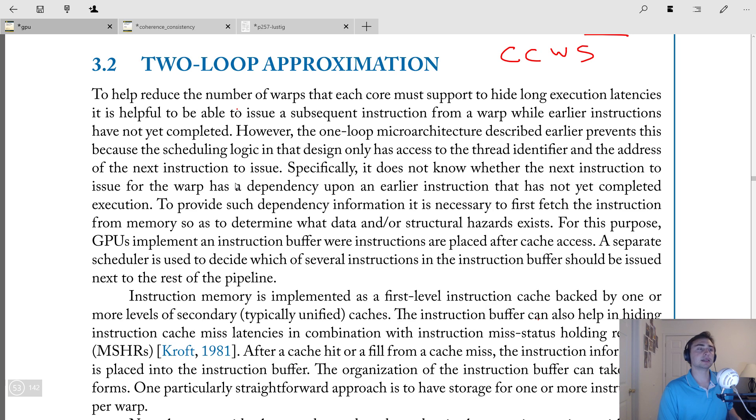So the real deficiency of the one-loop approximation is that we really just have a thread identifier and an address that we're considering, that address of the next instruction. But what it doesn't say is whether the next instruction to issue for the warp has a dependency on an earlier instruction. It means in the one-loop approximation, we have to wait for one warp's instruction to finish before we can issue another instruction from that warp, because we're not keeping track of dependency information.